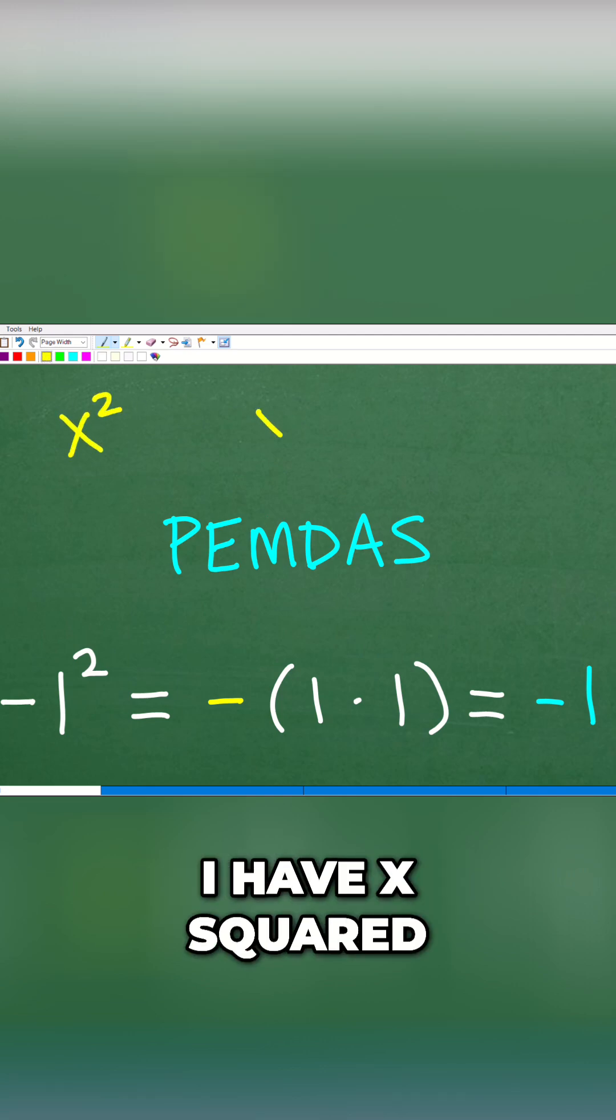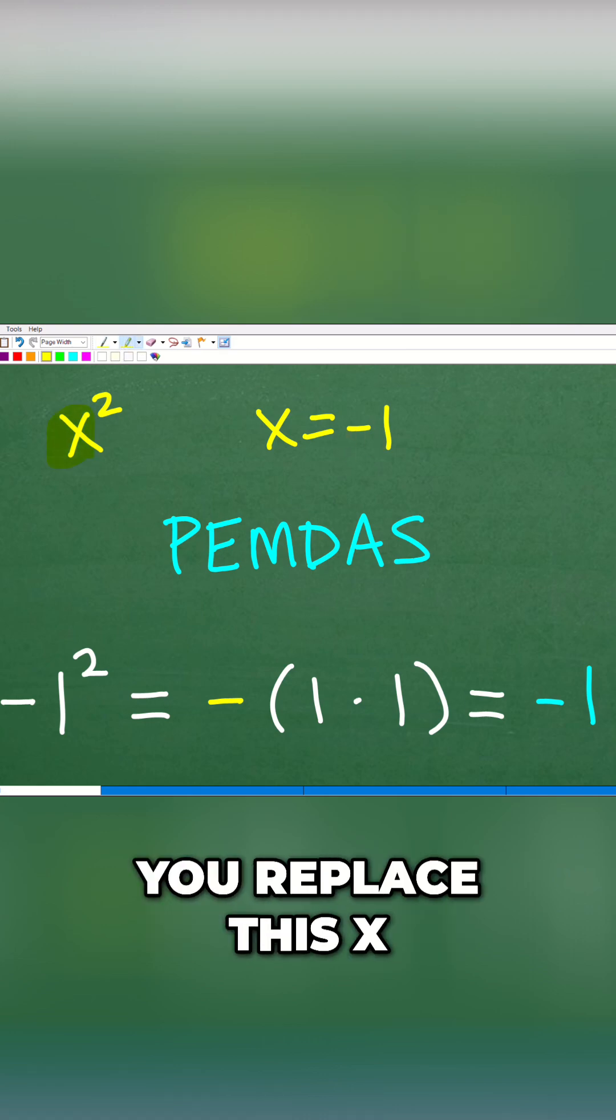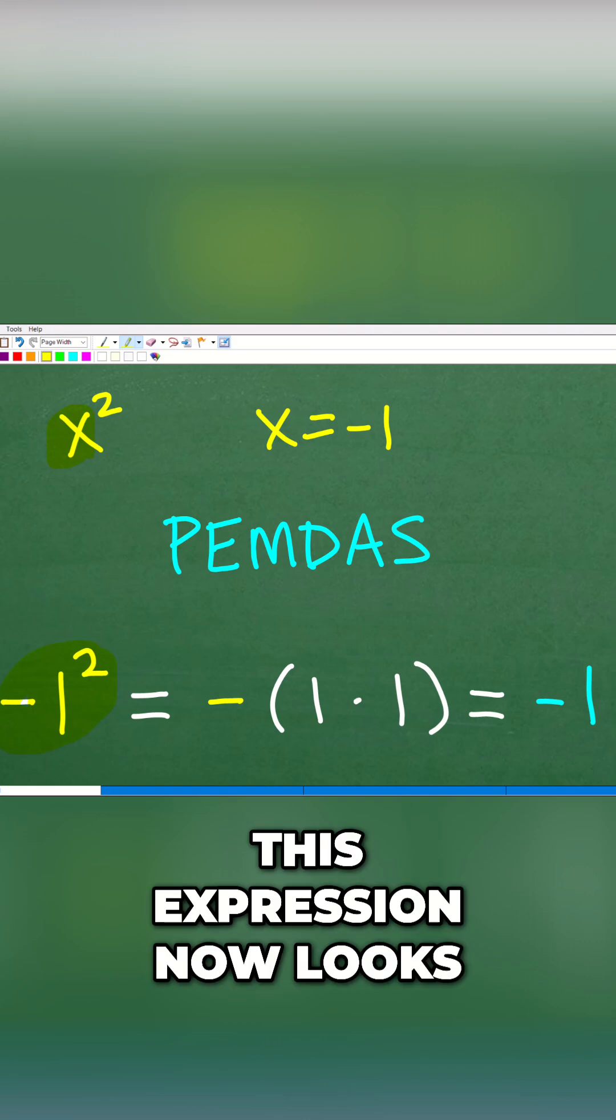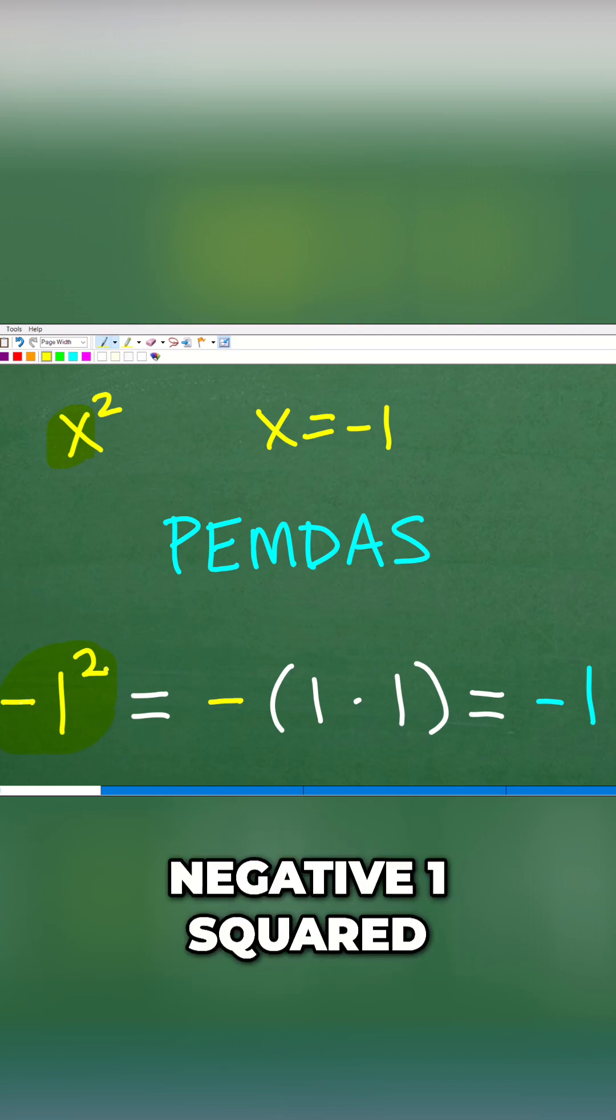I have x squared, and I need to plug in negative one for this x squared. So when you do this, replace this x with negative one, you think that this expression now looks like this: negative one squared, right?